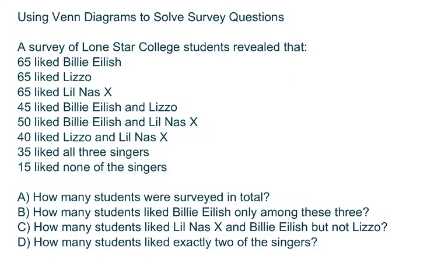Let me look at an example here. A survey of Lone Star College students revealed that 65 liked Billie Eilish, 65 liked Lizzo, and 65 liked Lil Nas X. Now 45 liked Billie Eilish and Lizzo, 50 liked Billie Eilish and Lil Nas X, 40 liked Lizzo and Lil Nas X, 35 liked all three singers, and 15 liked none of the singers.